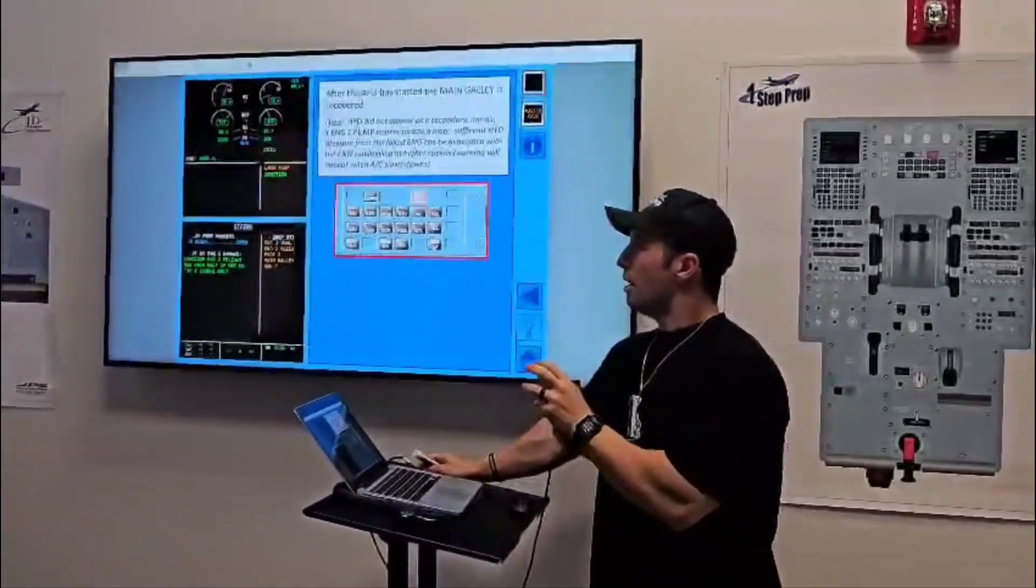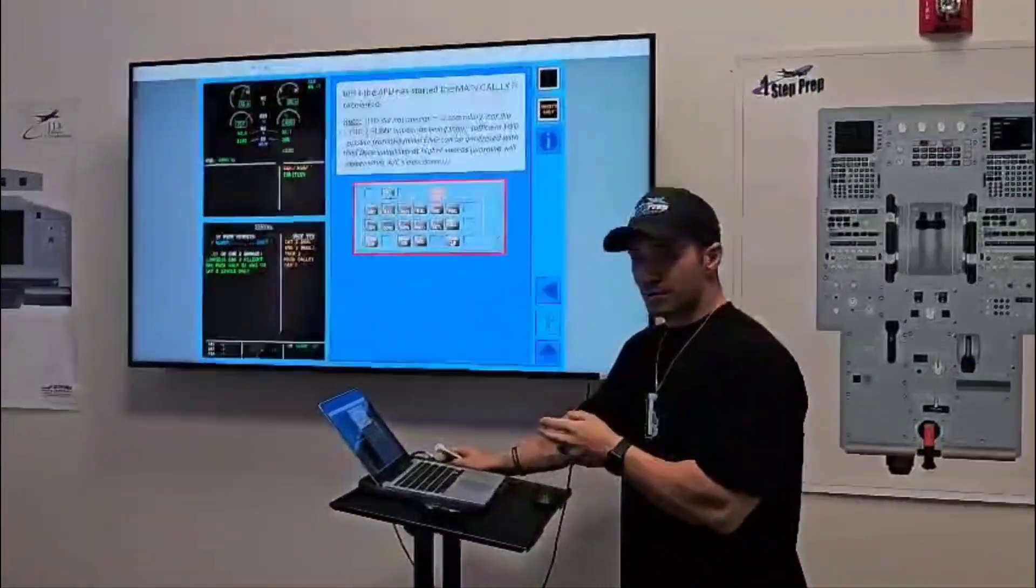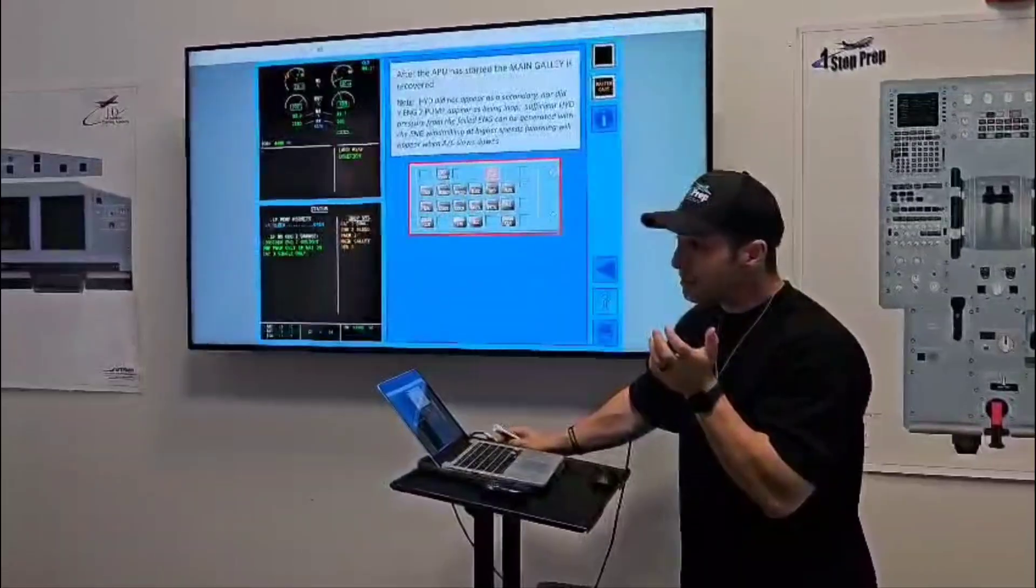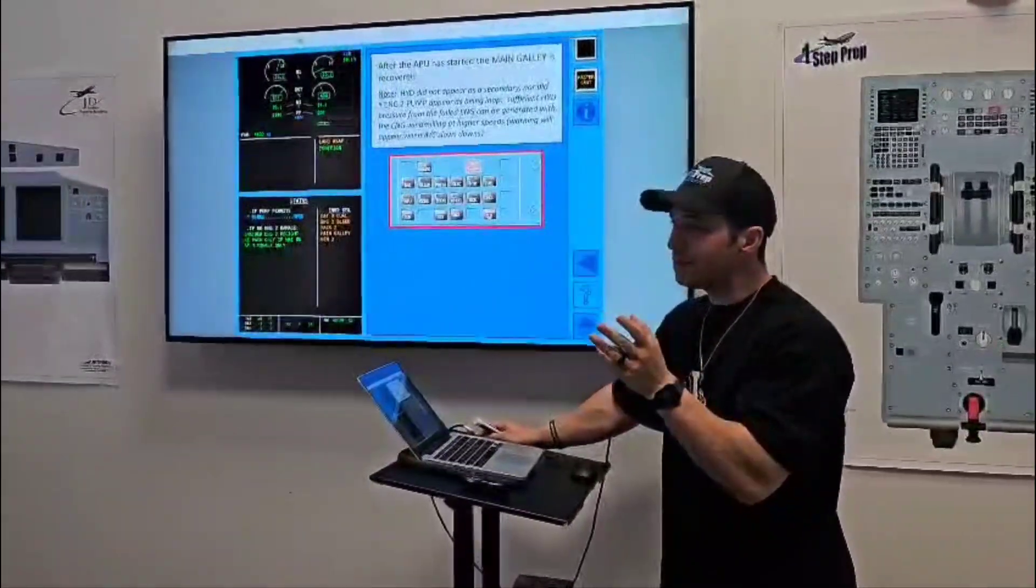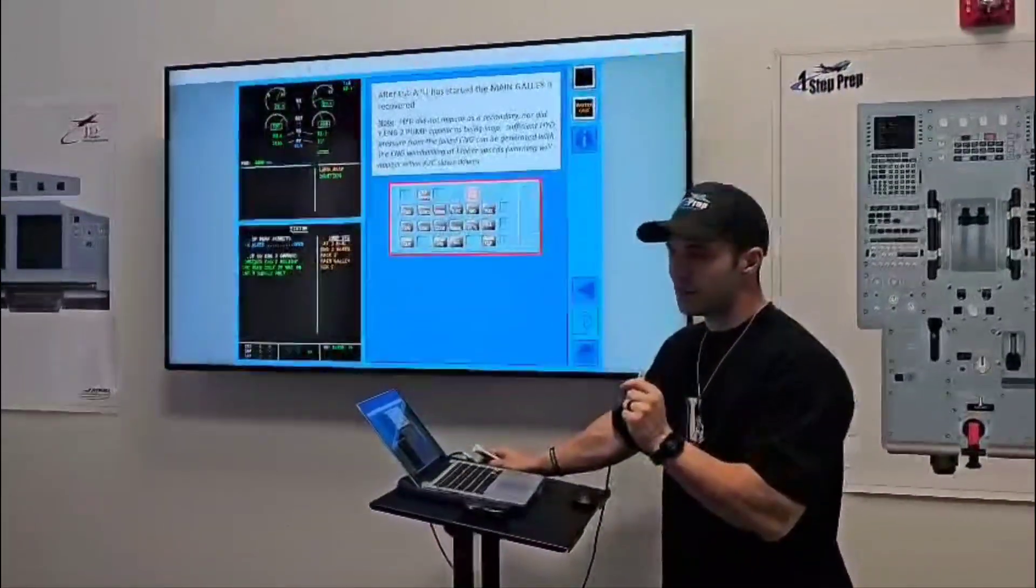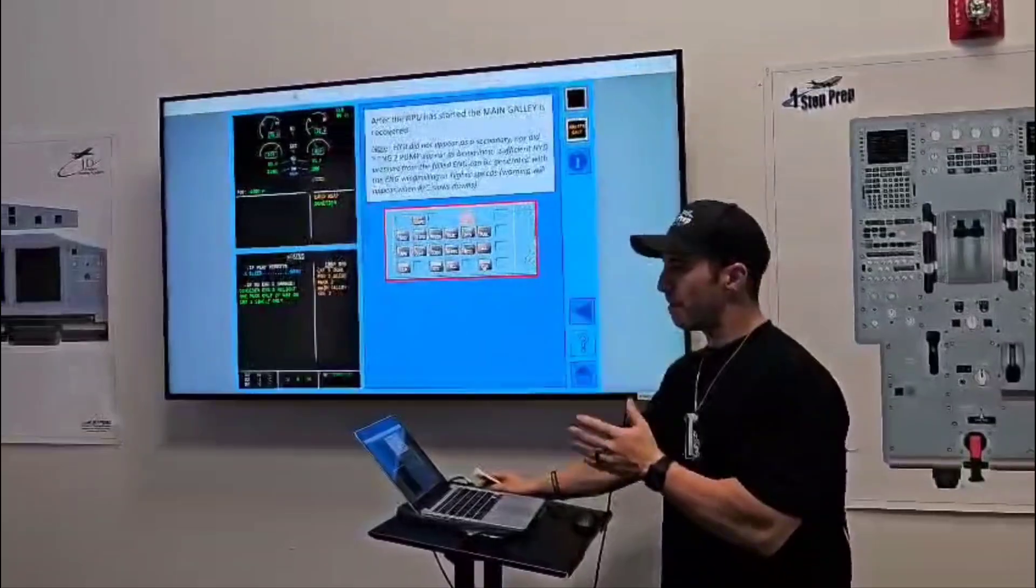If we do the relight and it's not successful, what's going to happen? Relight procedure complete, it wasn't successful. Continue ECAM. Now we go back to the ECAM and we're going to read it straight through.